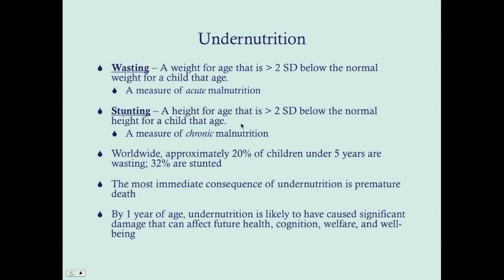Whereas stunting — a height-for-age more than two standard deviants below the normal height for a child that age — is more a measure of chronic malnutrition. Even if a nine-year-old child stopped eating for a week, their height probably wouldn't be significantly stunted. But if a child is malnourished for years and years on end, that's going to affect their height. So stunting, which is about height, is a measure of chronic malnutrition, whereas wasting — a function of weight — is a measure of acute malnutrition.